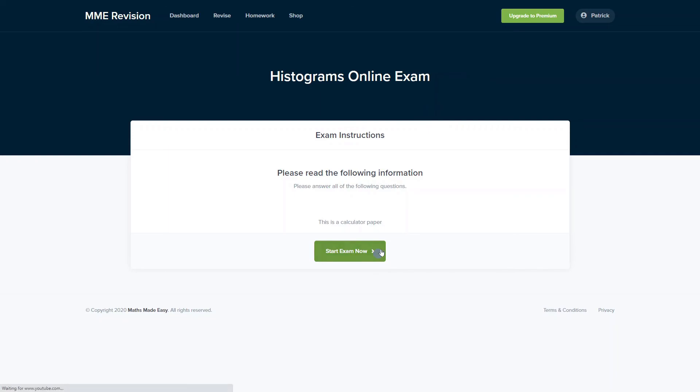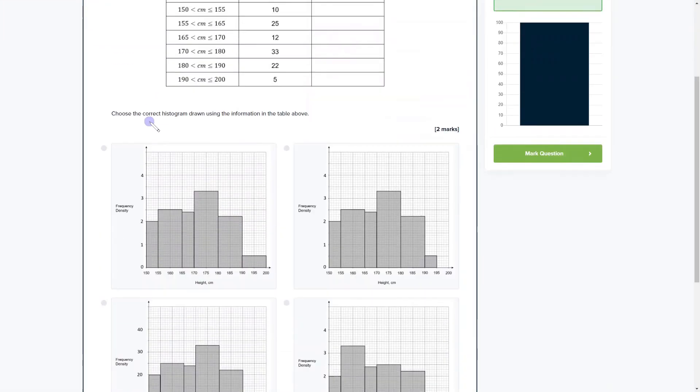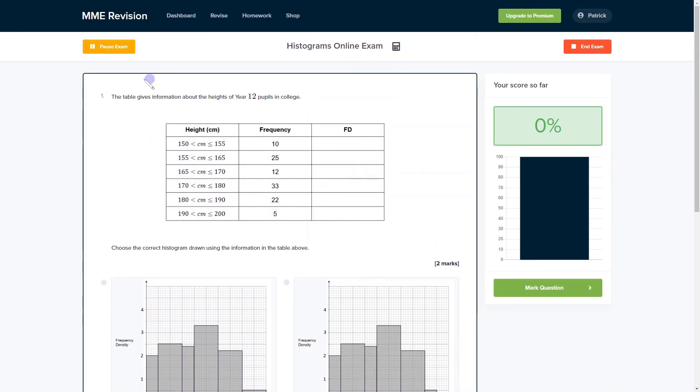It's available through our revision platform and here you'll find loads of different questions to have a go at, all of which you'll receive instant feedback on as well as being able to view the worked solutions. This is really useful if you want to keep track of the areas that you're weak on and find out where your strengths lie. If you're interested then you can click the link below and it'll take you straight there.